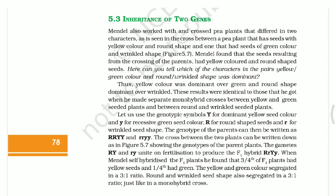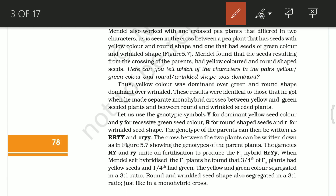Today our topic is inheritance of two genes. In the previous three parts we covered inheritance of one gene, which includes the monohybrid cross. Now, inheritance of two genes generally involves the dihybrid cross. The difference between mono and di: mono means single, di means double. So in inheritance of one gene we considered a single character, like height — one plant is tall and the other is dwarf.